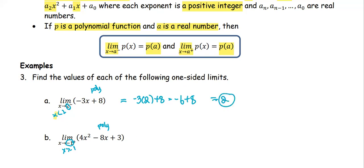In part B, we replace x with the value negative 1. Negative 1 squared minus 8 times negative 1 plus 3. We get 4 times 1, which is 4. Negative 8 times negative 1, we get positive 8, and then plus 3.